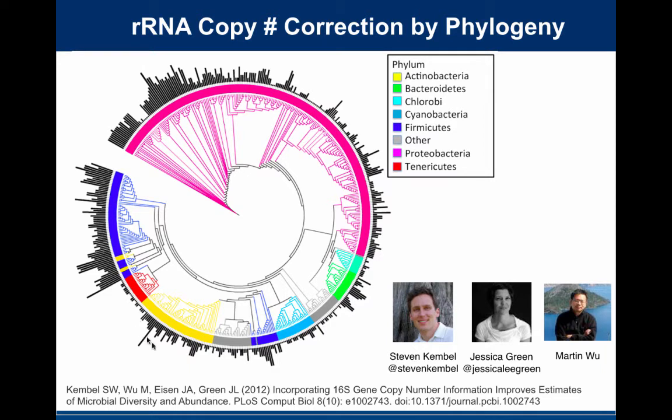In collaboration with Steve Kembel — now a professor in Montreal, who was then a postdoc in Jessica Green's lab — we developed a phylogenetic contrast-based method, taking Felsenstein's phylogenetic correction of correlations and applying it to ribosomal RNA copy number. You can correct the estimate of relative abundance from a community if you have information about the phylogenetic distribution of copy number across the phylogeny of the species.